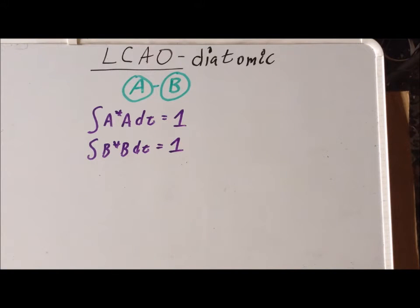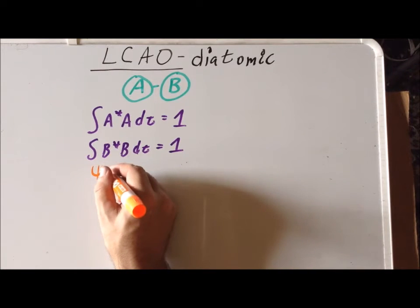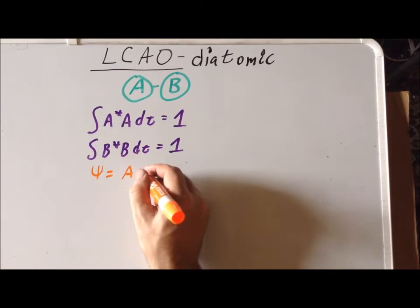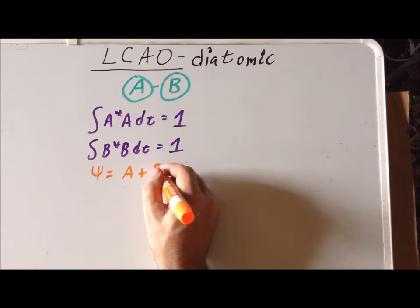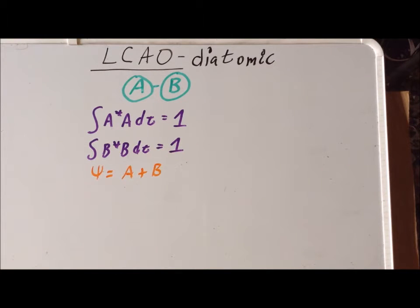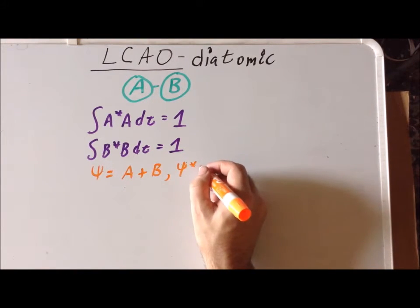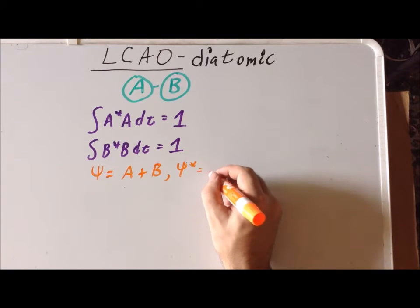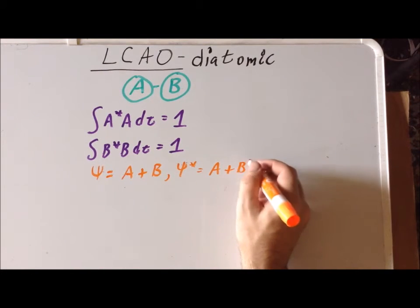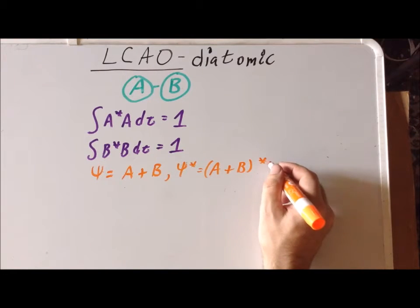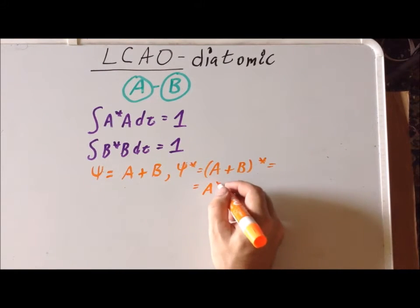What does the linear combination of atomic orbitals look like in this case? Well, for this video we want to look at the case of a bonding orbital. So in that case, our molecular orbital ψ is equal to A plus B. If that is true, then the complex conjugate ψ* is going to be equal to A plus B, the quantity star, which is simply A* plus B*.